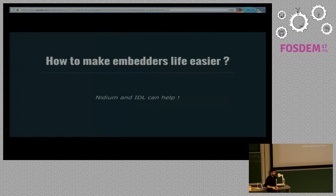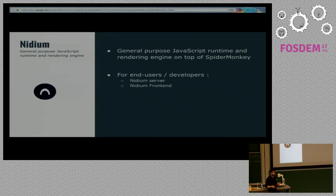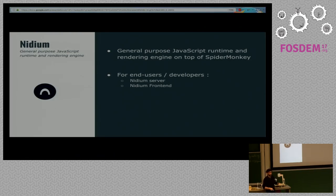So how can we make life easier? Well, through the project we've been working on — Medium. Medium is a general-purpose JavaScript runtime and rendering engine. We have two applications: Medium Server, which can be somewhat compared to Node.js (with less virtual, let's be honest), and Medium Frontend, which is a window where you can draw using Canvas API, WebGL API, Audio API, and a layout engine. To be clear, this is not using HTML — we just took SpiderMonkey and made bindings to render things on screen.